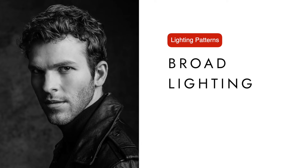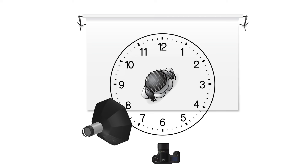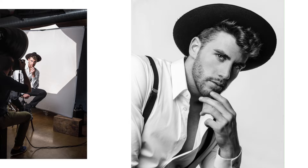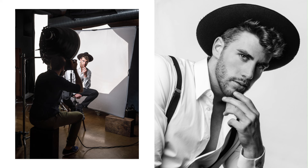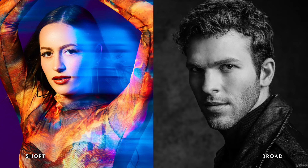Broad lighting is similar to Rembrandt lighting, but the subject is slightly turned away from the light source. In this position, both eyes should receive light, and the face will likely appear broader because more of it will be illuminated from the ear to the nose tip. So this might be good for male subjects, and traditionally is not seen as a good thing for female subjects. For most female subjects, you'd want to short light them in order to make their face look slimmer by only illuminating part of their face.